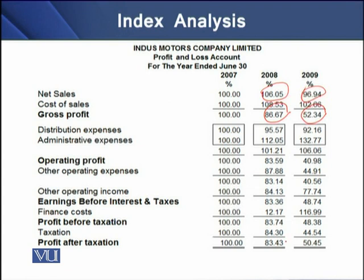Extending this analysis further, we can see that in 2008, profit after tax was only 83.43% of 2007 profit after tax. This ratio declined further, and in 2009, profit after tax was only 50.45% of 2007. So compared to 2007, profit after tax in 2009 was roughly halved, coming down to about 50.4%.